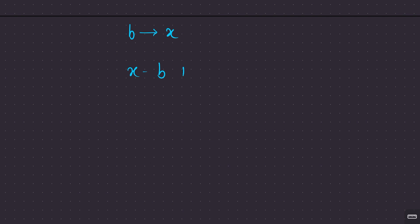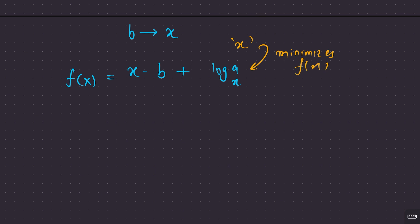For those curious about the stricter bound: we want to find the optimal x (new value of b) that minimizes total operations F(x) = (x - b) + log_x(a). Using the change of base formula, F(x) = (x - b) + ln(a) / ln(x). To minimize, we differentiate and set F'(x) = 0.